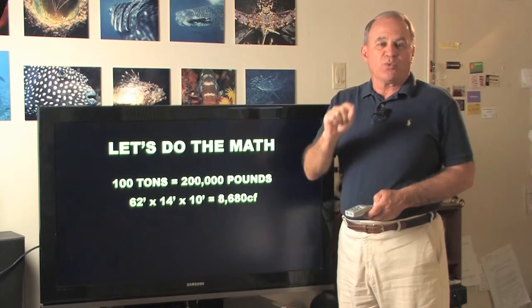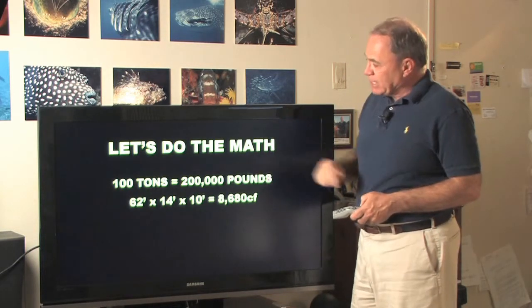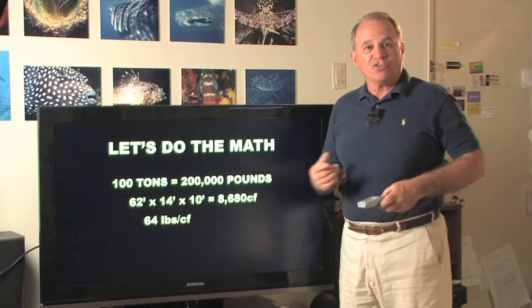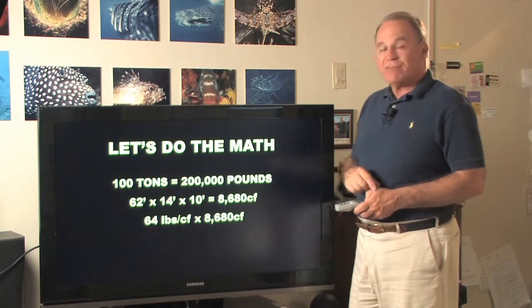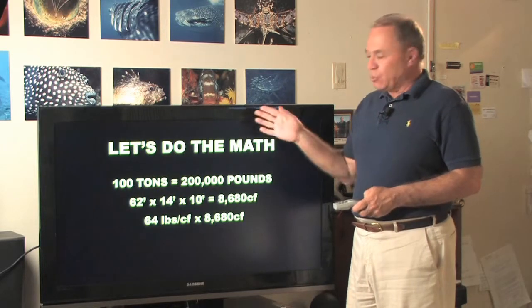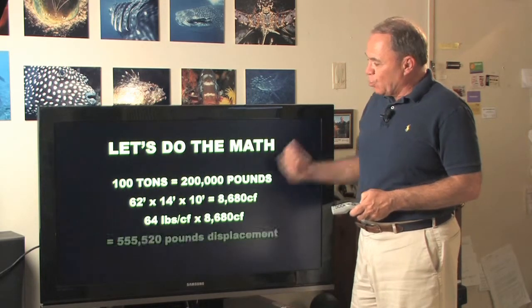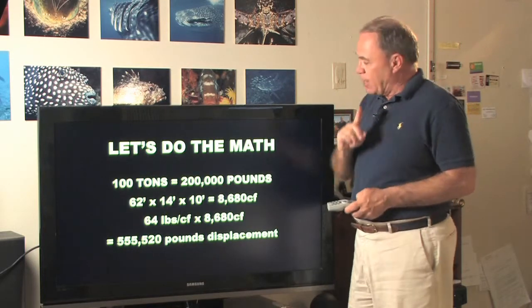Since we're in salt water, we need to know that salt water displaces 64 pounds per cubic foot. And by multiplying the 64 times the volume of the hull, we come up with the total displacement of the vessel, which is actually over half a million pounds.